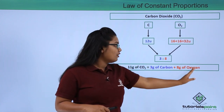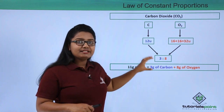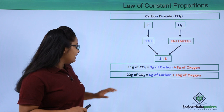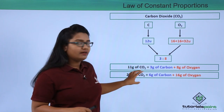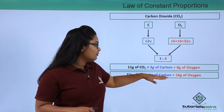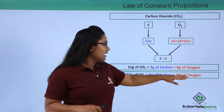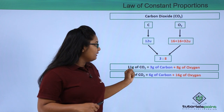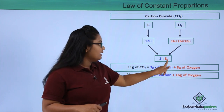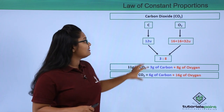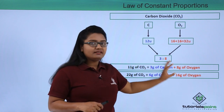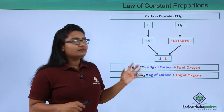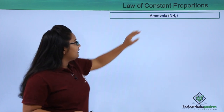If we have 22 grams of carbon dioxide, then 6 grams of carbon and 16 grams of oxygen must be present in order to maintain the ratio 3:8. This is how carbon and oxygen are always present in a fixed proportion in the carbon dioxide molecule.